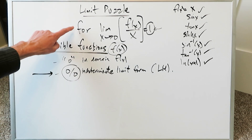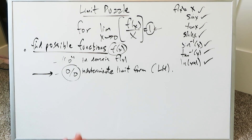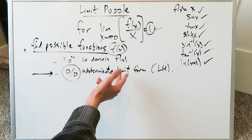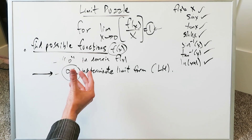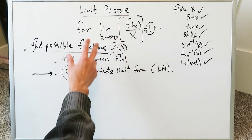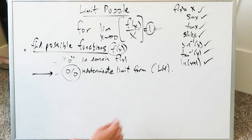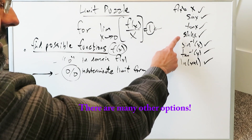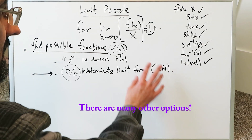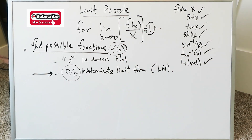In conclusion, we were looking for functions f(x) such that the limit as x approaches 0 of f(x)/x equals 1. The key clues were: 0 must be in the domain of f(x), and plugging in 0 must yield a 0/0 indeterminate form so that L'Hôpital's rule can be applied. We found 7 possibilities: f(x) = x, sin x, tan x, sinh x, arcsin x, arctan x, or ln(x+1). For any of these, the limit as x approaches 0 of f(x)/x equals 1. There are certainly more possibilities out there.